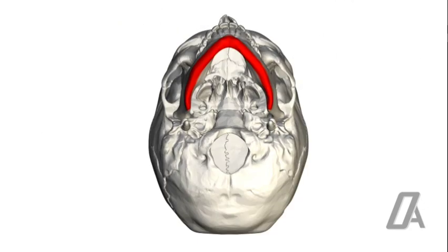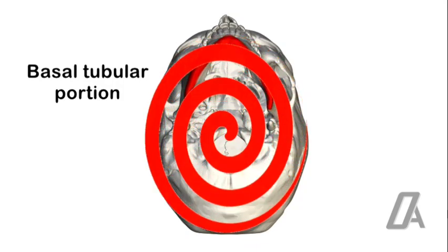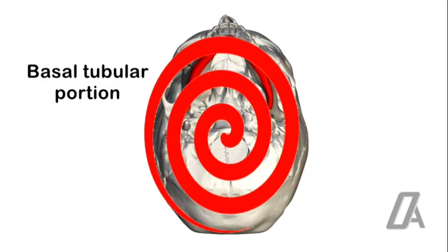The body of the mandible, which forms a basal tubular portion in the form of an arc from the foramen ovale through the mandibular to the mental foramen, is the most constant portion of the mandible. This portion of the mandible is in the form of a logarithmic spiral from the foramen ovale to mental foramen protecting the mandibular nerve.